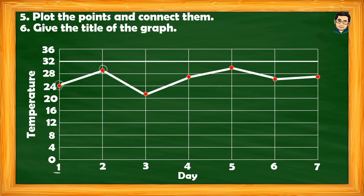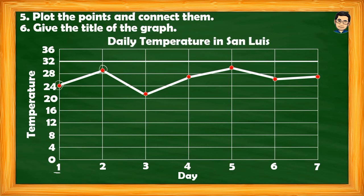The final step is to give the title of the graph. The graph must have a title. We can write: 'Daily Temperature in San Luis' or 'Recorded Temperature in San Luis for Seven Days.' The title must be appropriate and based on the given data. Since we are discussing temperature, the title should not say 'Population of San Luis for Seven Days' — it must reflect the correct subject.